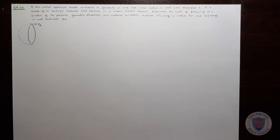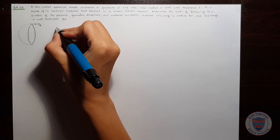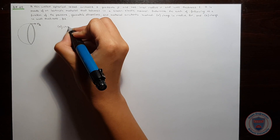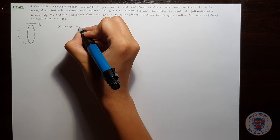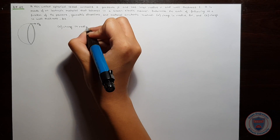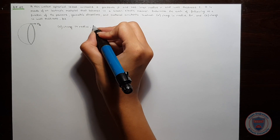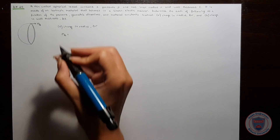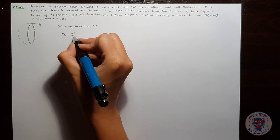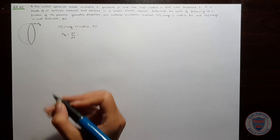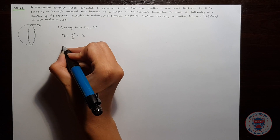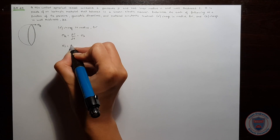Let's start with Part A: change in radius, which is delta R. We know that for spherical vessels, sigma theta is equal to PR over 2T, and it is equal to sigma x. We also know that sigma R is equal to zero.